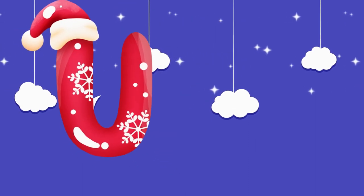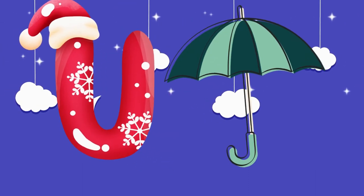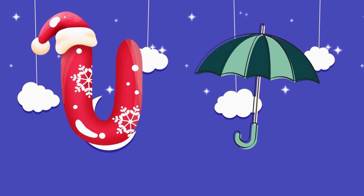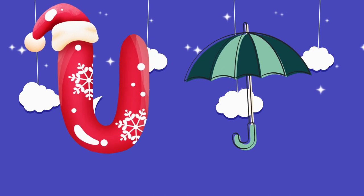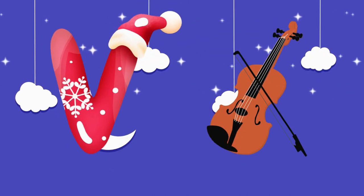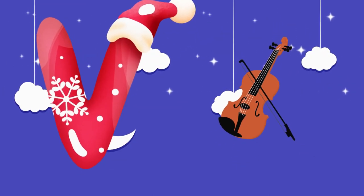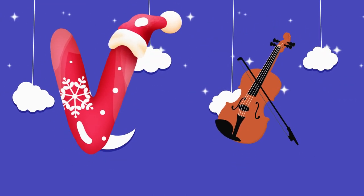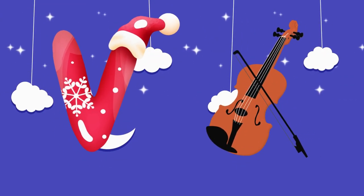U is for umbrella, u-u-umbrella. V is for violin, v-v-violin.